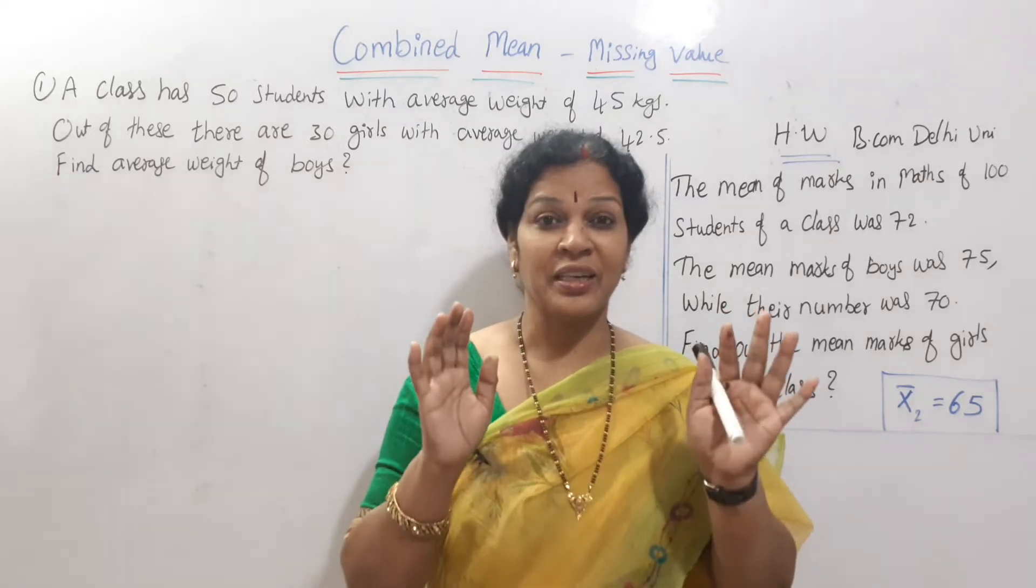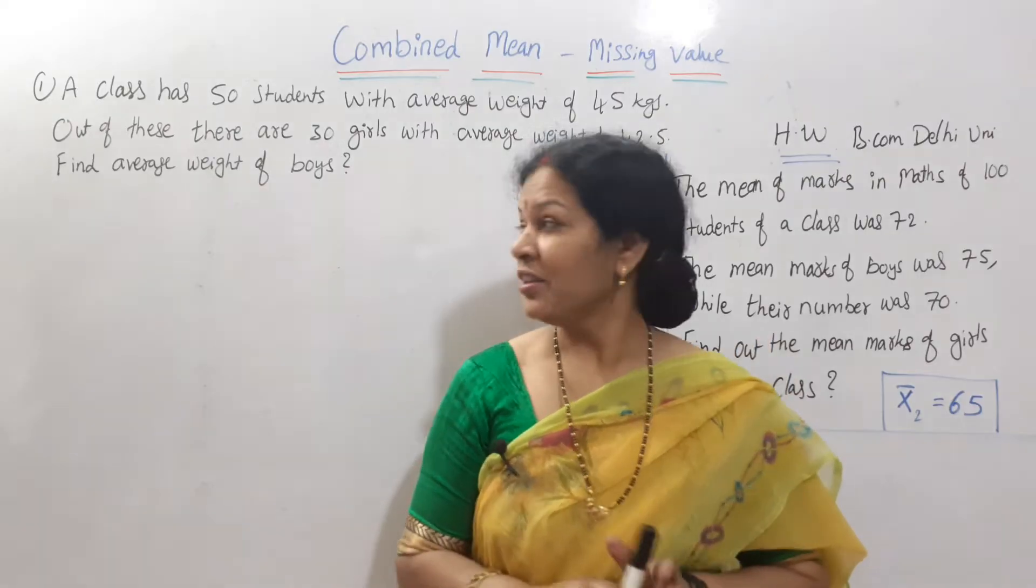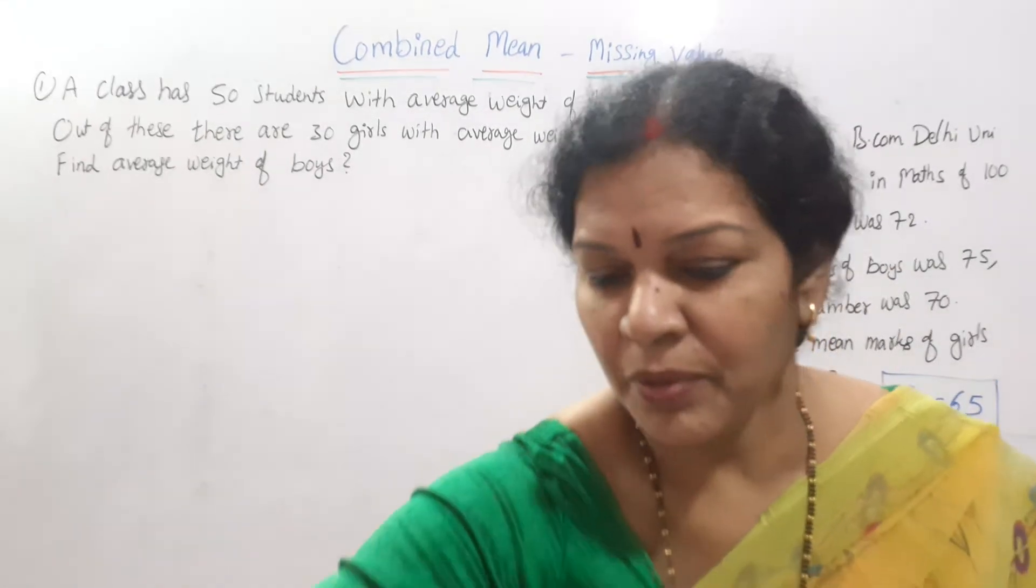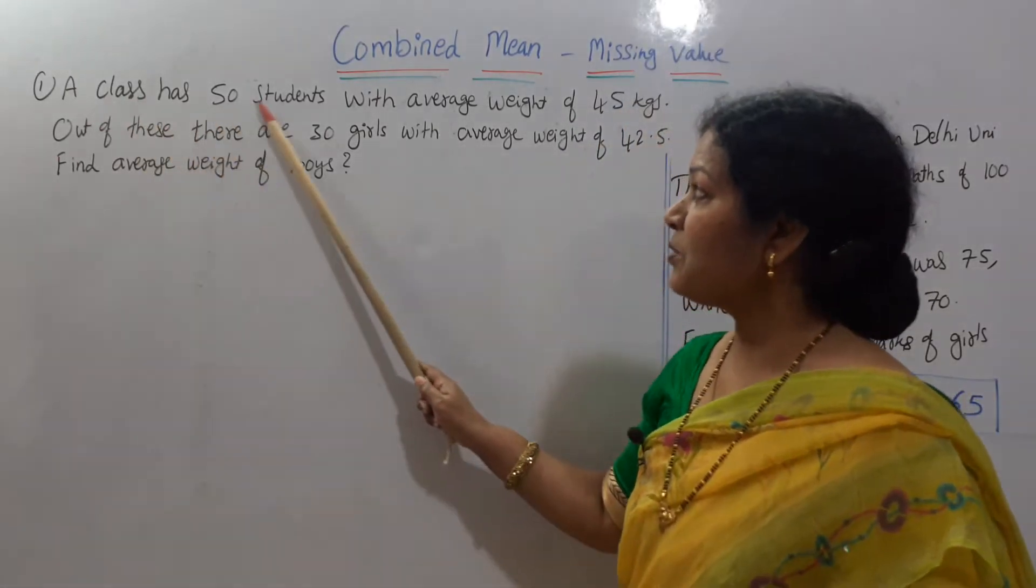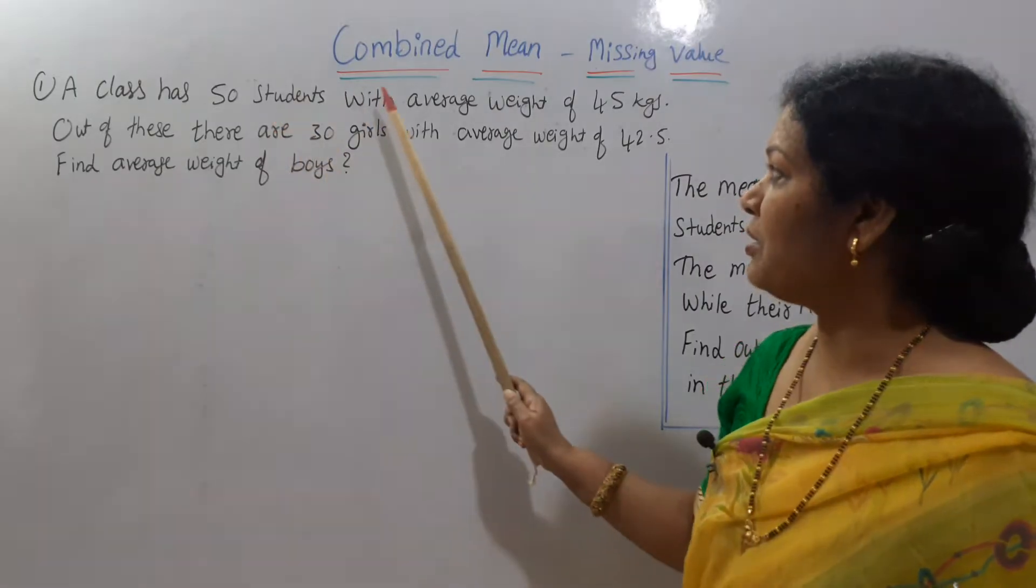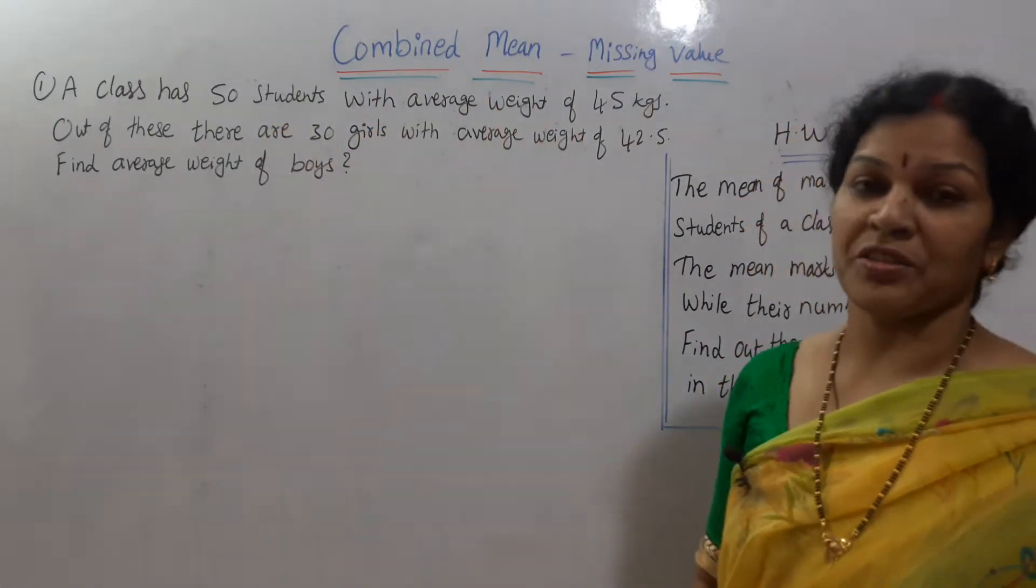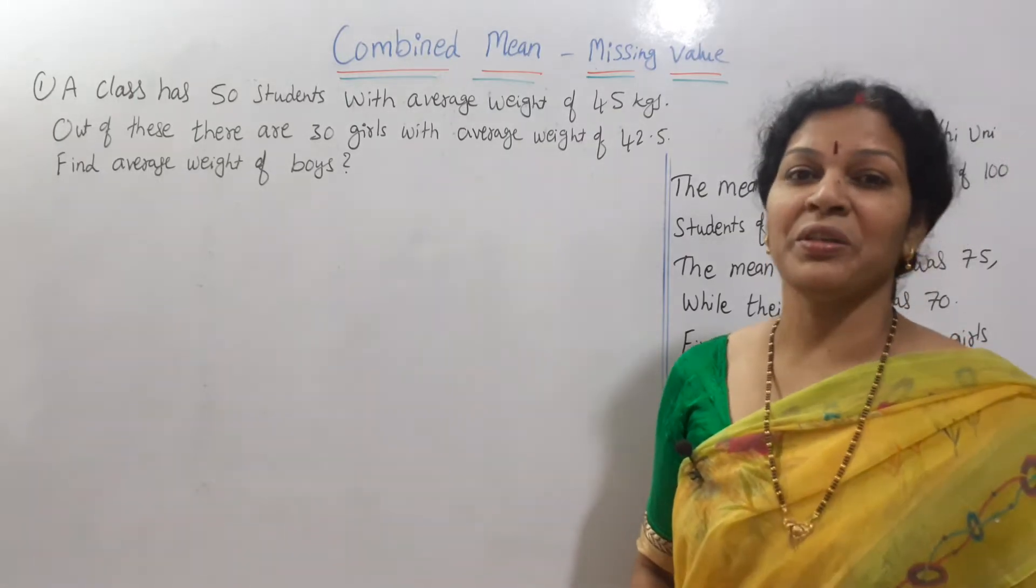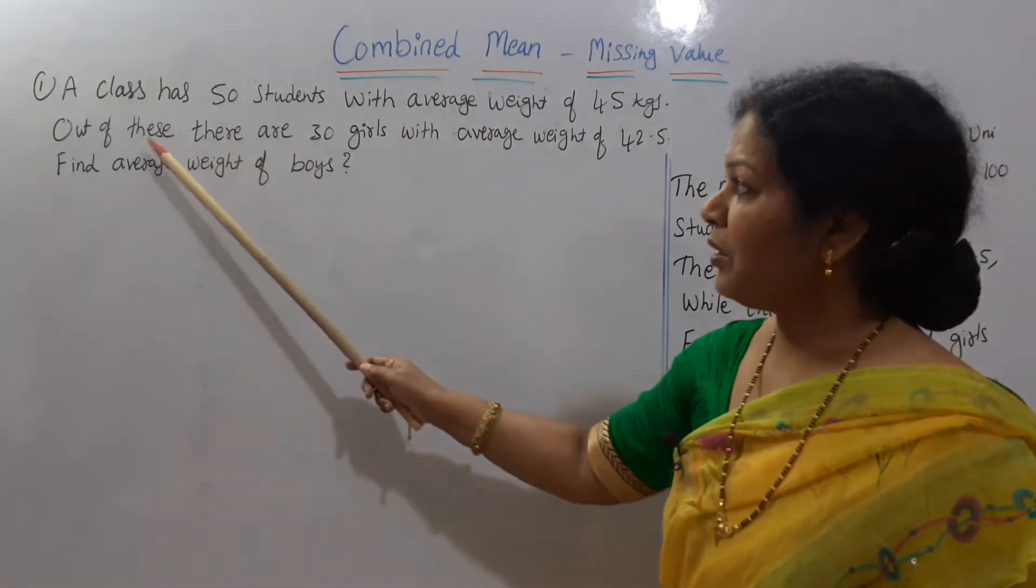They don't use the combined mean word, right? So this is the problem. What is the problem? A class has 50 students with average weight of 45 kgs. Average weight is given. Entire class average weight is given.